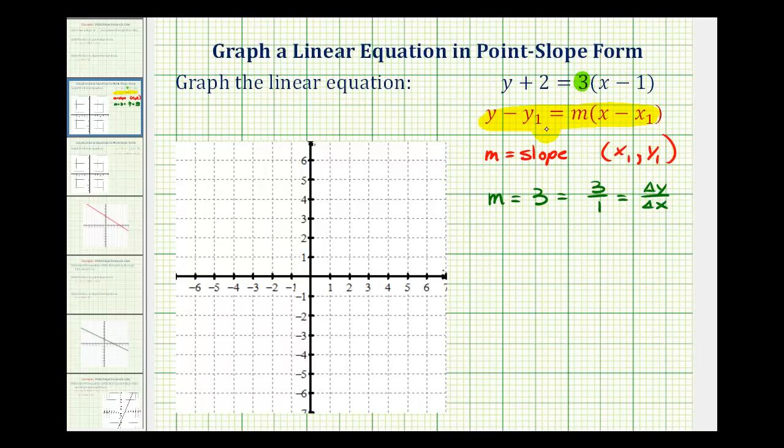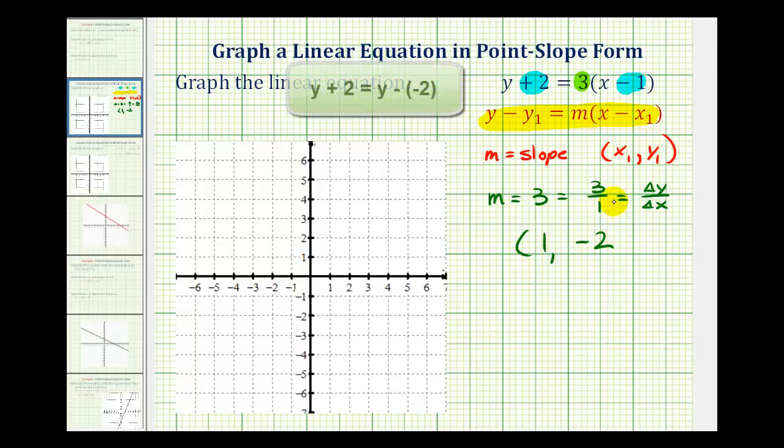And then when identifying the point on the line given by point-slope form, we need to consider if it's subtraction or addition. Notice the form is x minus x sub one, which means the x-coordinate of the point is going to be positive one. And then for the y-coordinate, notice how it's y plus two, and the form is supposed to be y minus y sub one. So this means the y-coordinate is going to be negative two. If we had to write this as addition, it would have to be y minus negative two.